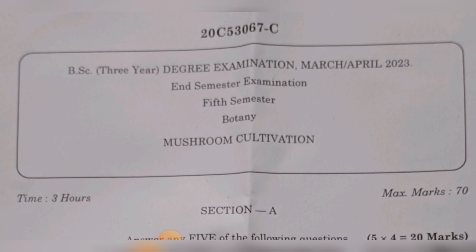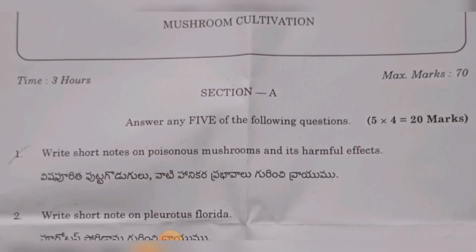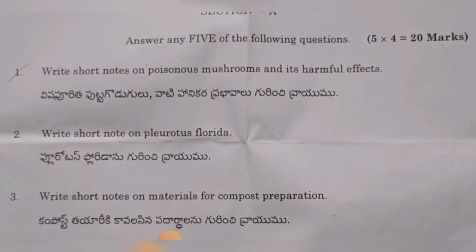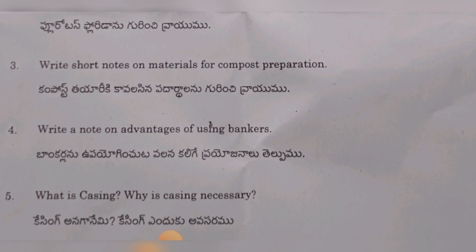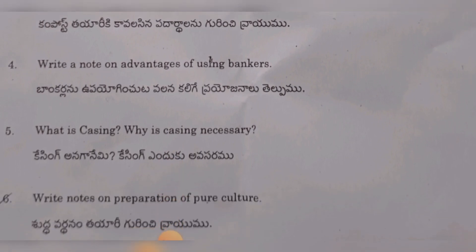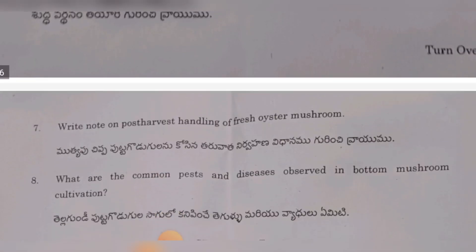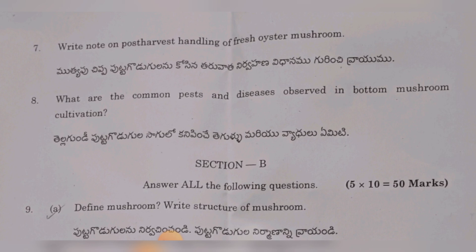First, the short answer questions: Write short notes on poisonous mushrooms and their harmful effects. Write a short note on Pleurotus florida. Write short notes on materials for compost preparation. Write a note on advantages of using bankers. What is casing and why is casing necessary? Write notes on preparation of pure culture. Write a note on post-harvest handling of fresh oyster mushroom.